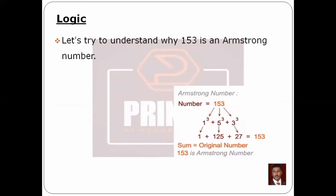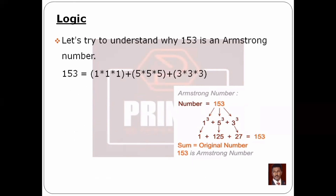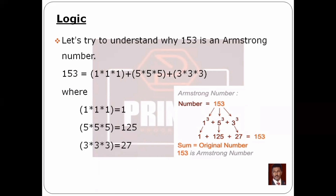Let's understand why 153 is an Armstrong number. We separate the digits 1, 5, and 3. We compute 1³ + 5³ + 3³, which equals 1 + 125 + 27 = 153. Since that sum equals the original number, 153 is an Armstrong number.